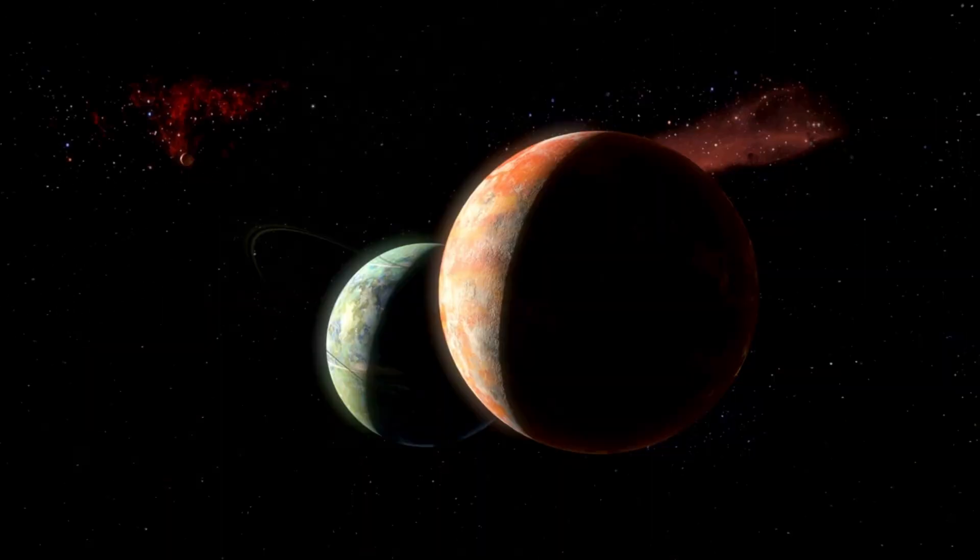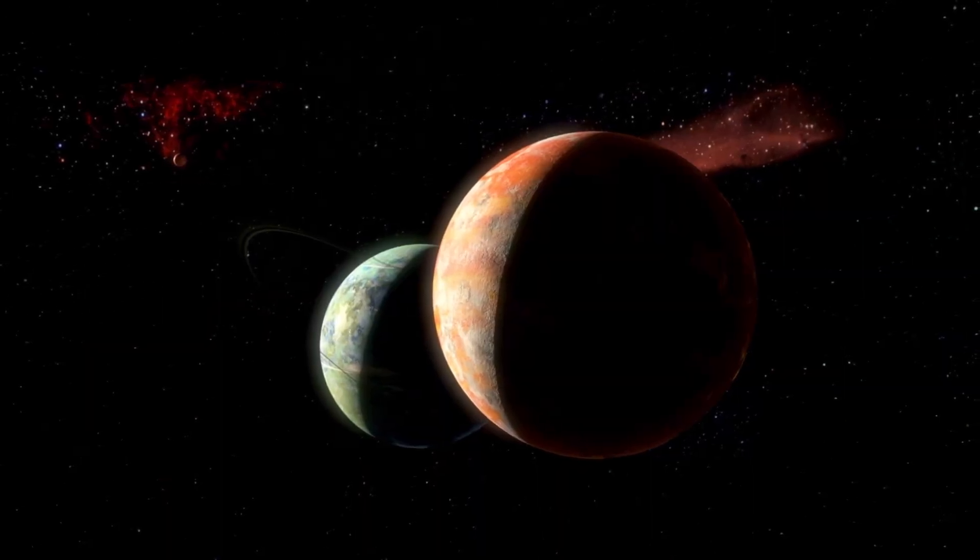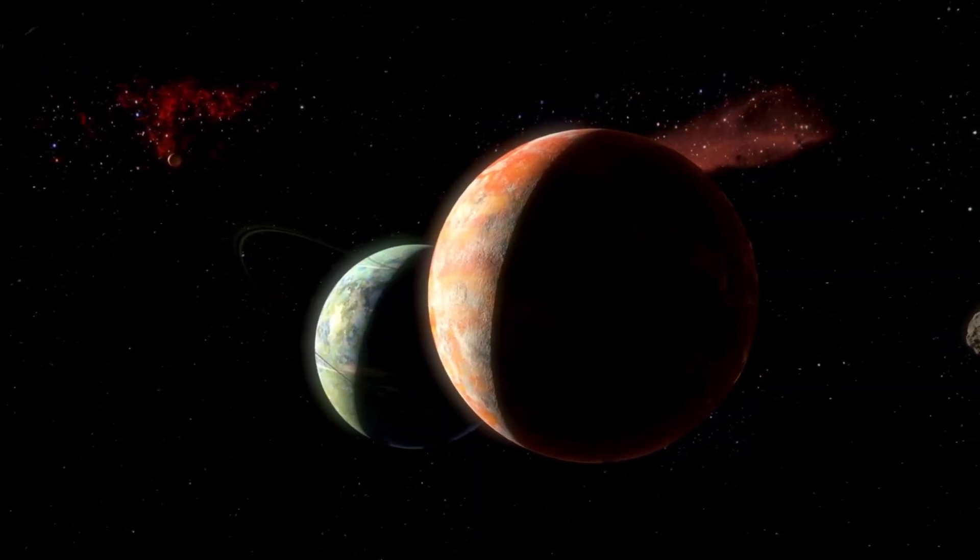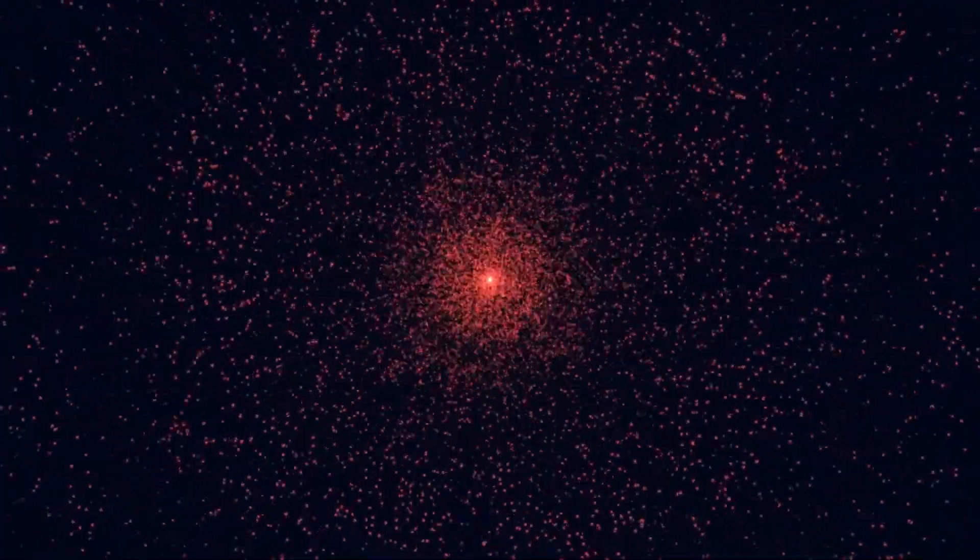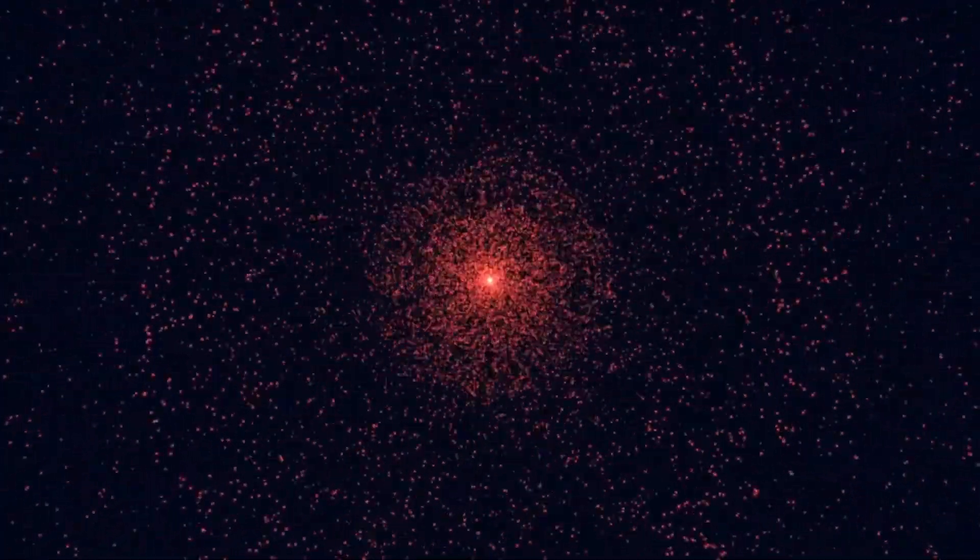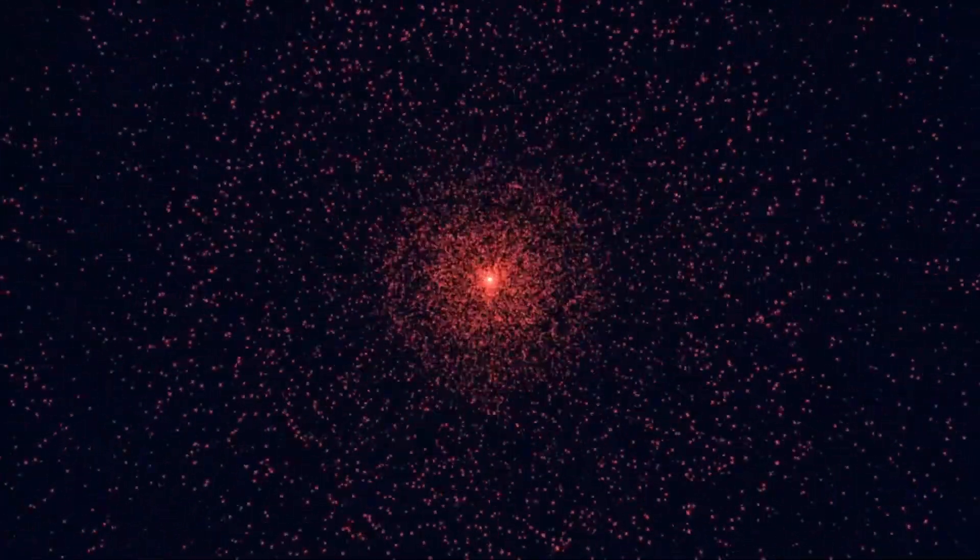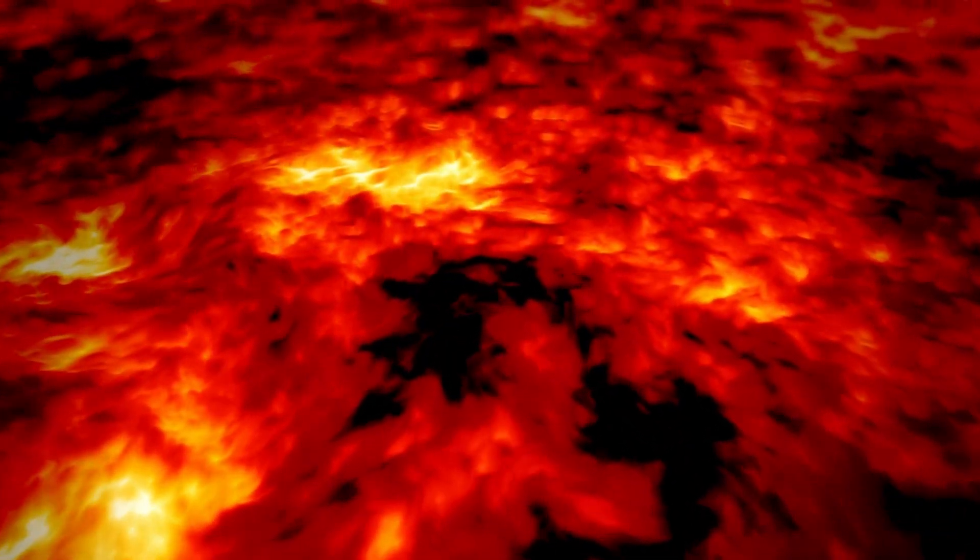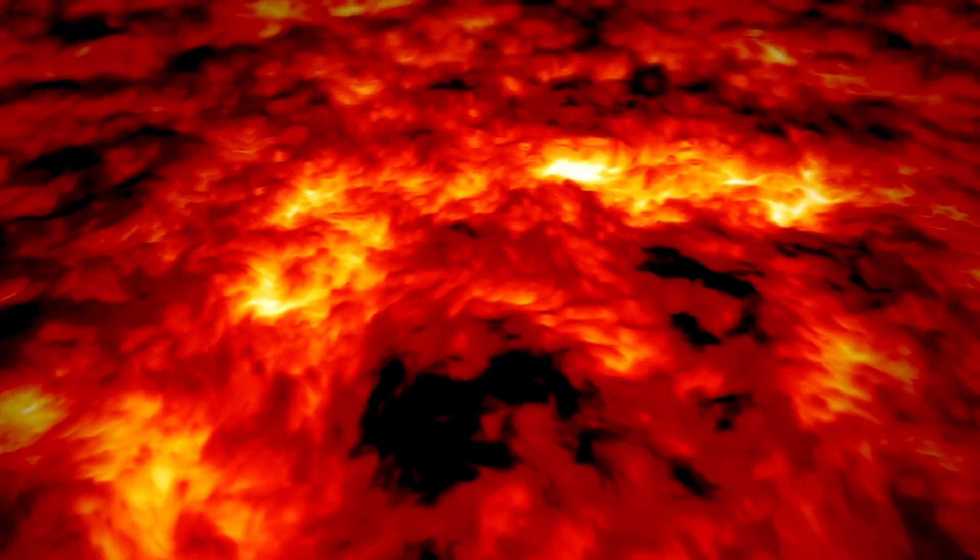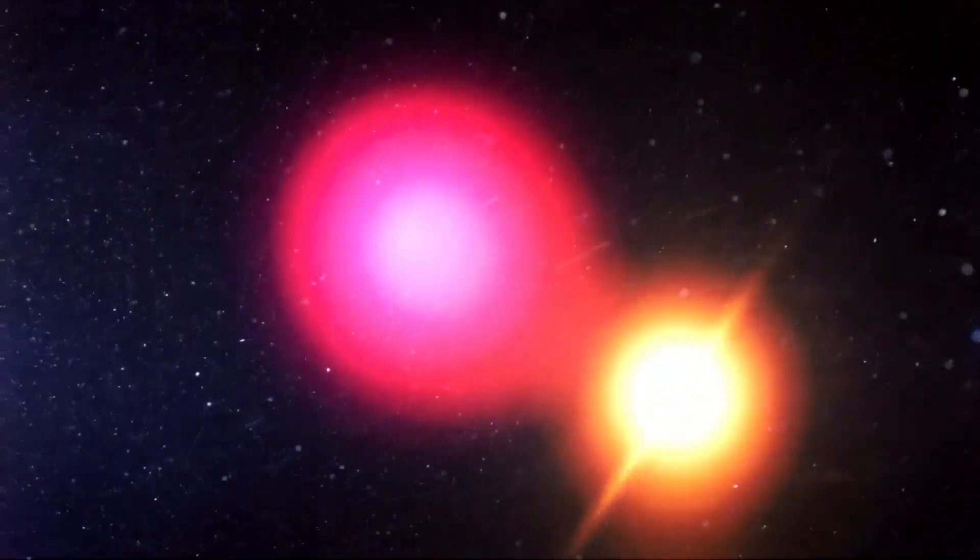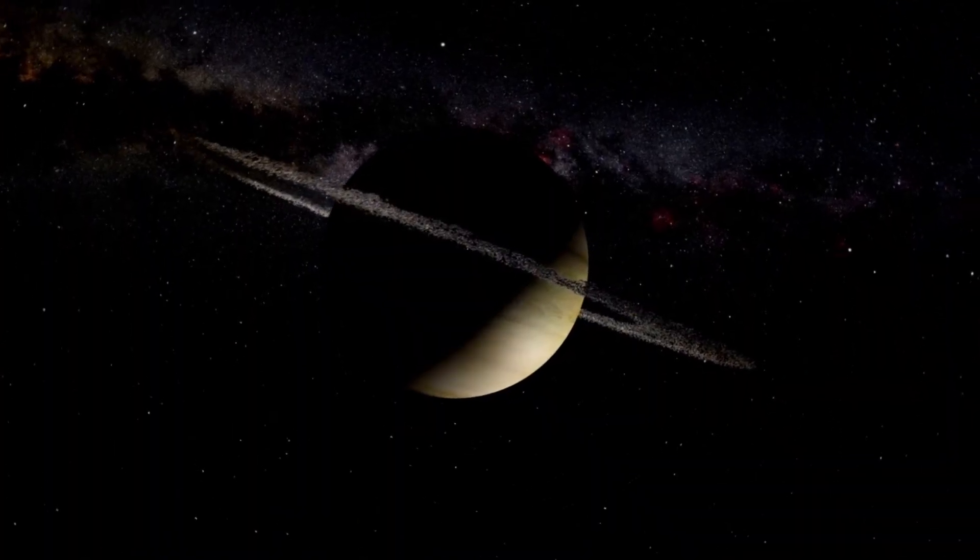To an observer standing on the surface of Proxima B, Proxima Centauri would dominate the sky, appearing as a large glowing red orb roughly three times the size of how the sun appears from Earth. The eerie perpetual twilight that might bathe the planet's surface due to the red dwarf's dim glow evokes imagery far removed from our familiar blue skies and sunlit days. Despite being located in what is called the habitable zone—the region around a star where conditions might support liquid water—Proxima B is far from Earth-like.